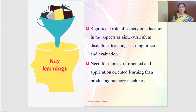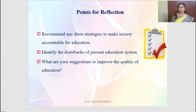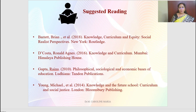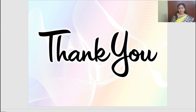Key learnings from this video lecture include the significant role of society on education in aspects of aim, curriculum, discipline, teaching-learning process and evaluation, and the need for more skill-oriented and application-oriented learning rather than producing memory machines. Reflection points: Recommend three strategies to make society accountable for education; identify drawbacks of the present education system; and suggest improvements to the quality of education. Thank you for listening. Wish you good luck, students.